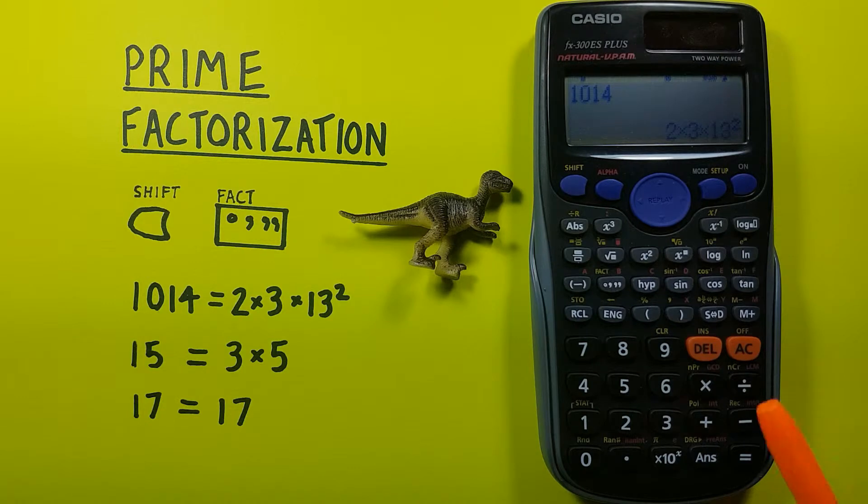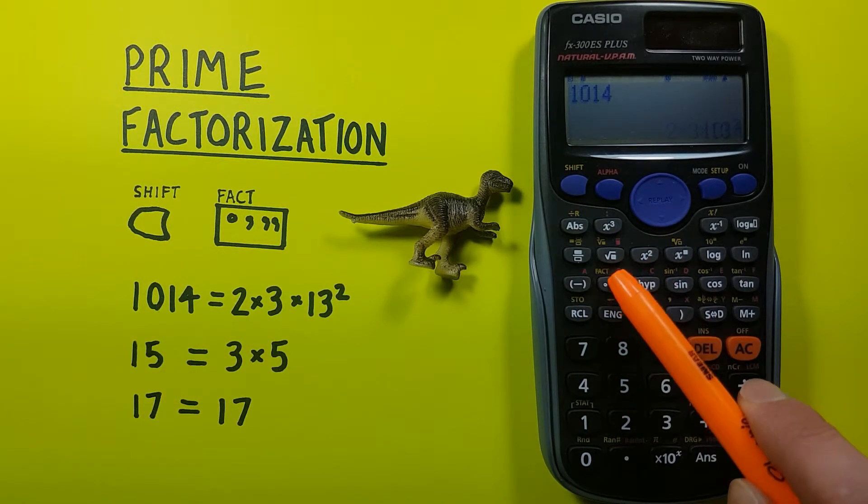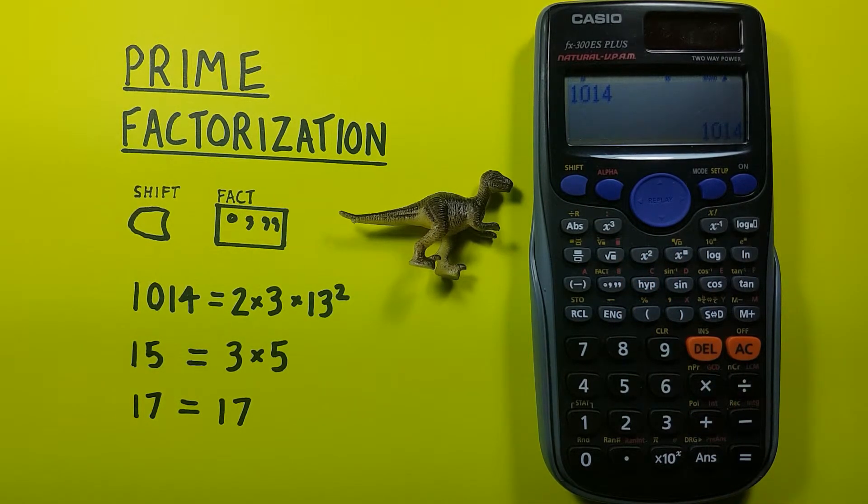We can go back again if we press shift degrees minute seconds again and we're back to the 1014 if we needed to change that back.